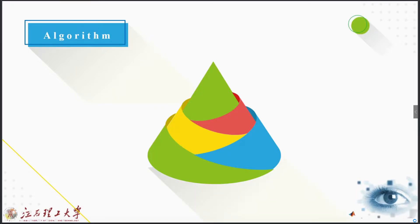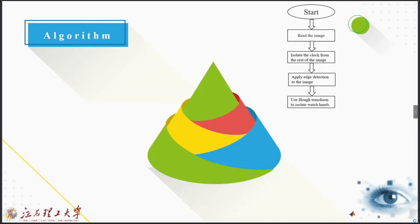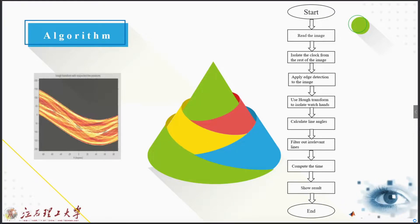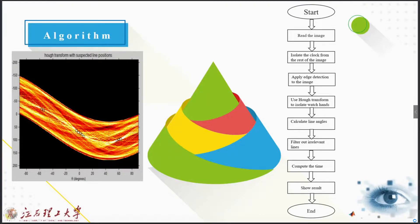Like all other programs, first we have to start that program, then we will read the image into the function. Then we will isolate the clock from the rest of the image, apply edge detection to the image, use the Hough transformation to isolate the watch hands, calculate the line angles, filter out irrelevant lines, compute the time, show the result to the user, and that will be the end of our program. Here's a picture of Hough transformation where we can see the suspected line positions.